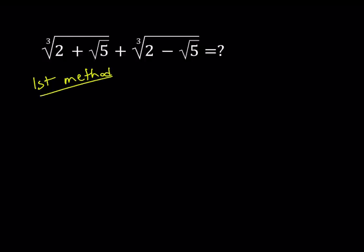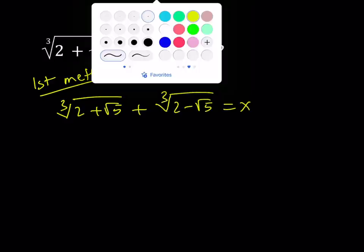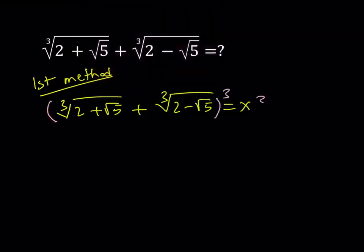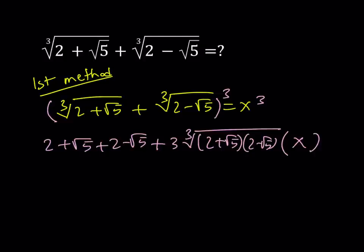My first method involves calling this whole thing x and cubing both sides. When I cube both sides, I would like to use an identity: a plus b quantity cubed can be written as a cubed plus b cubed plus 3ab times a plus b, which is equal to x. So I cube both sides, and then root 5 cancels out, 2 plus 2 equals 4, and then I have this expression right here.